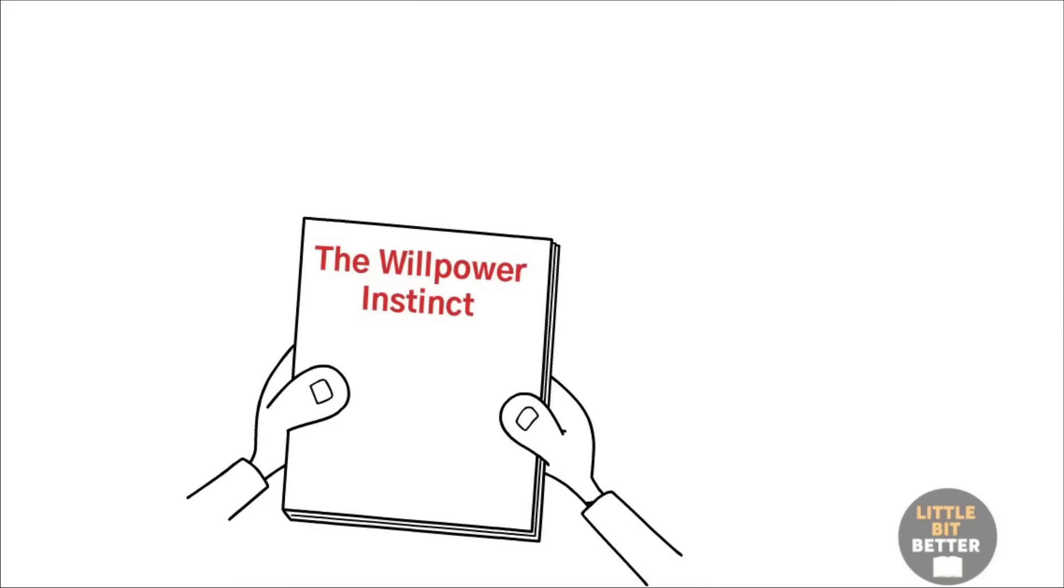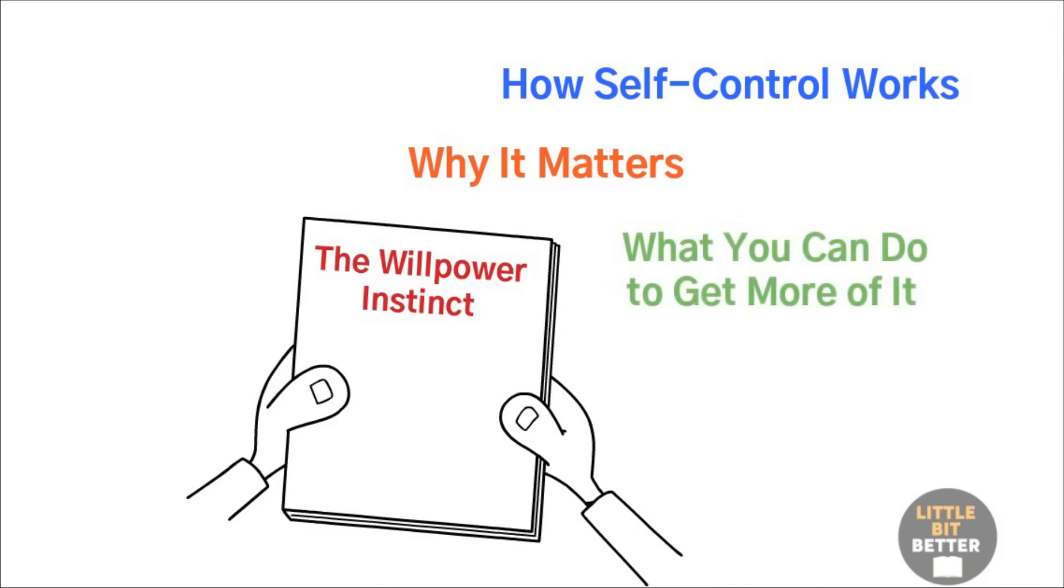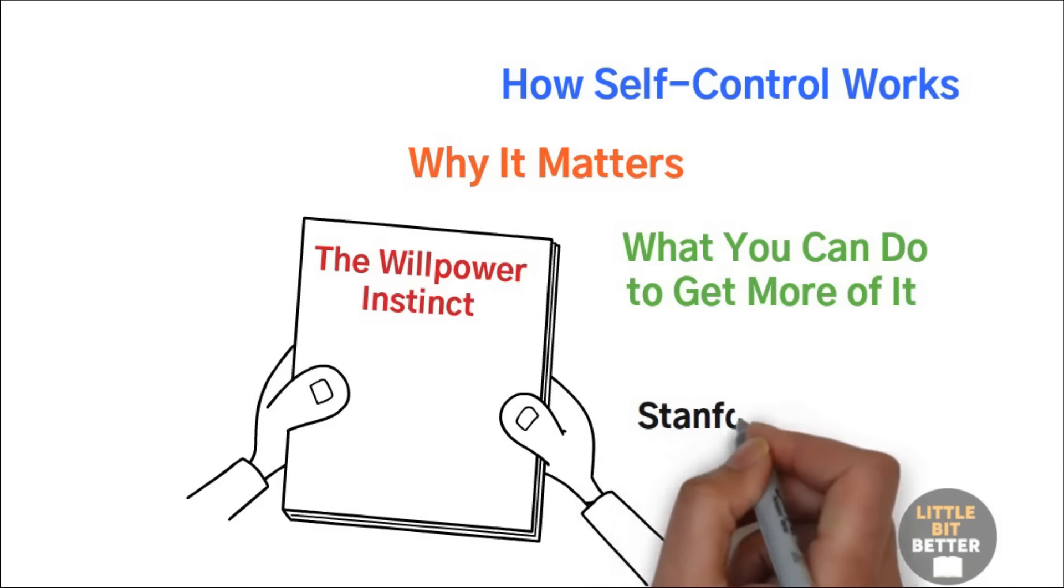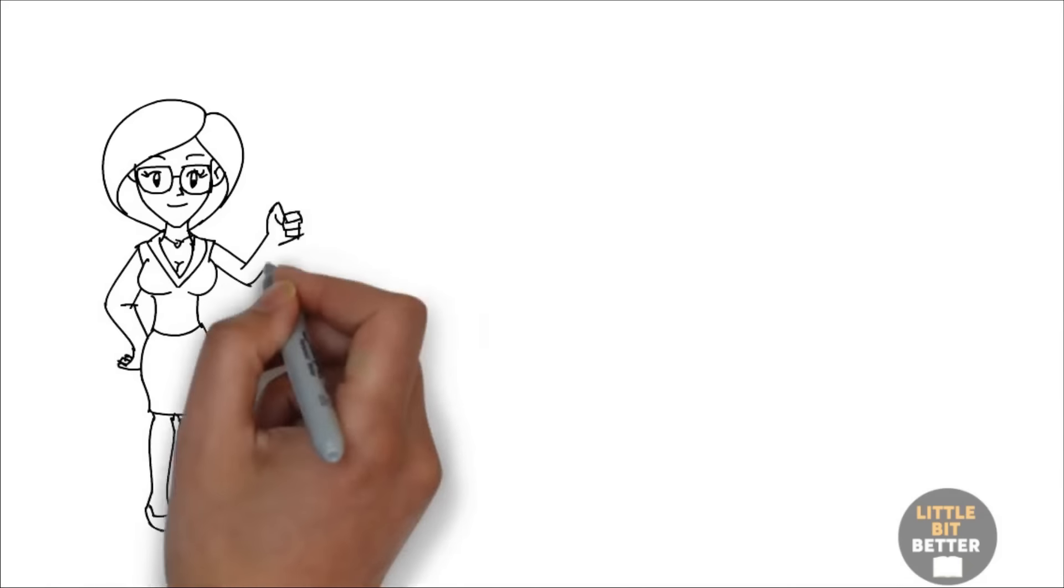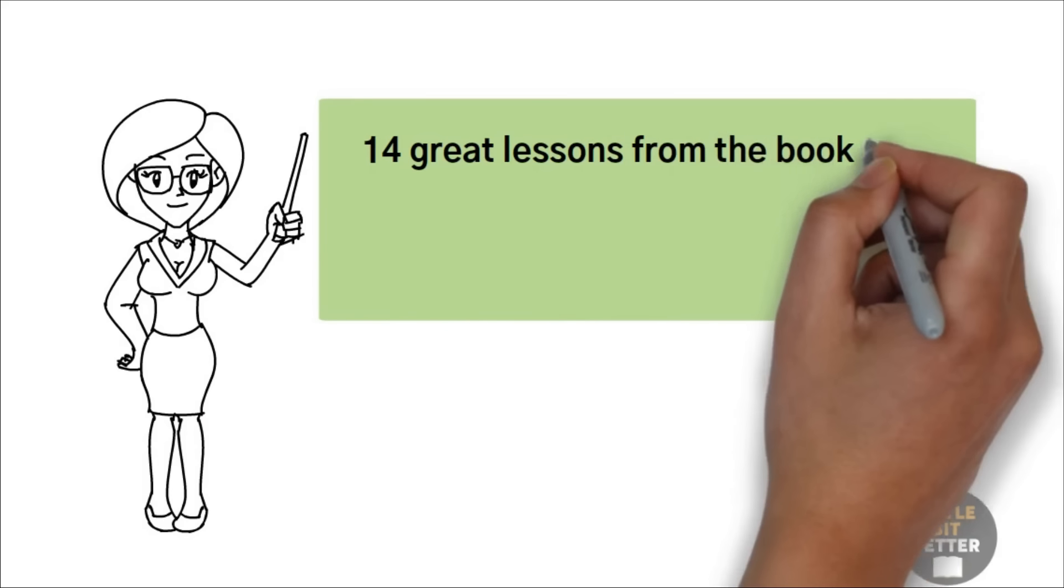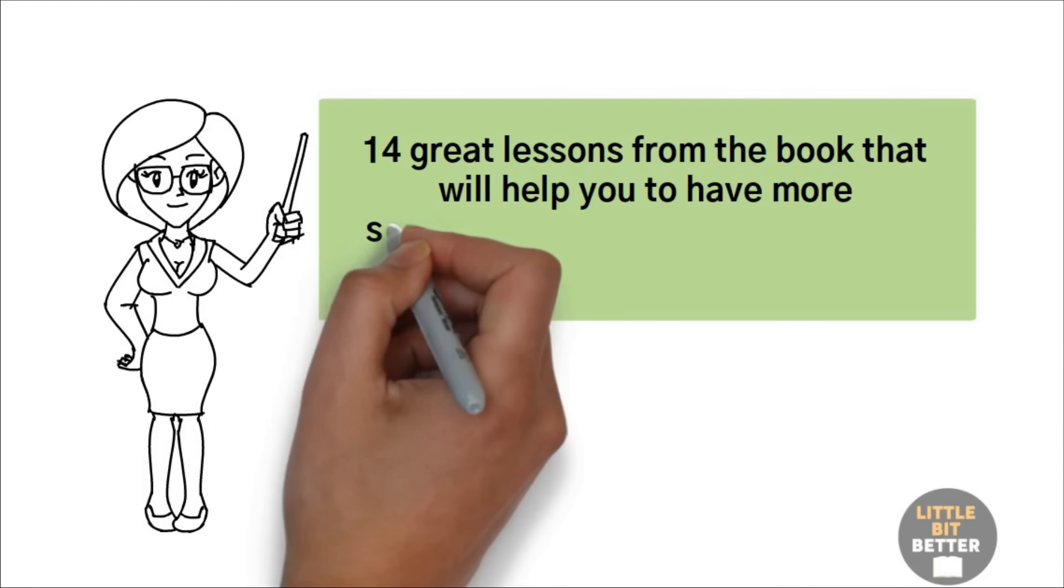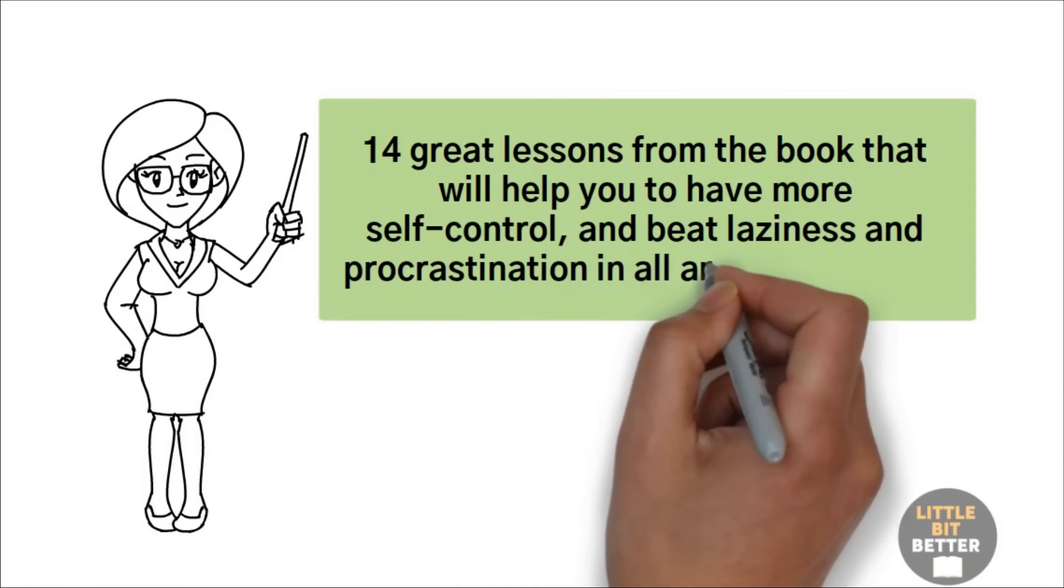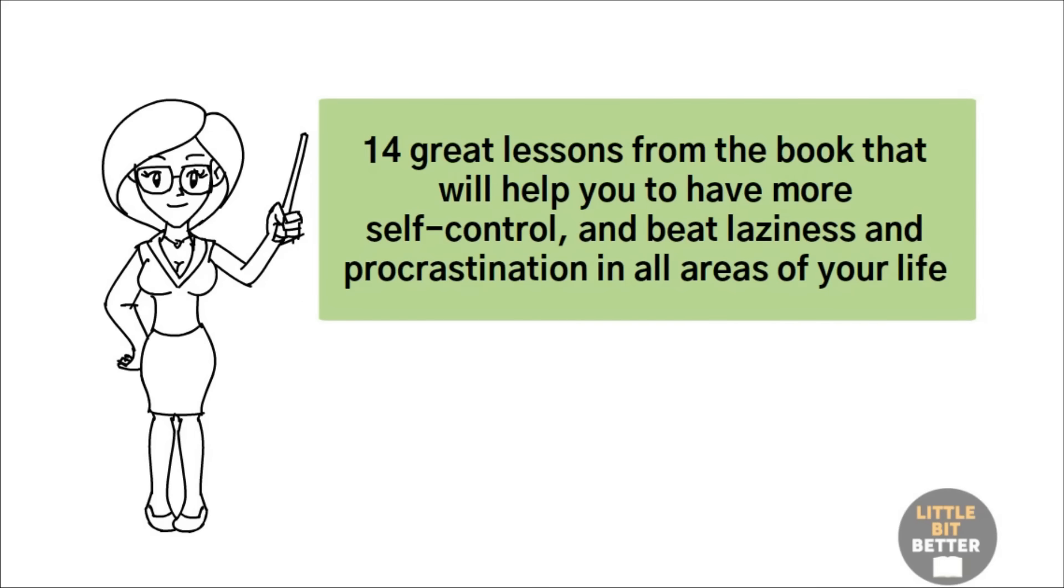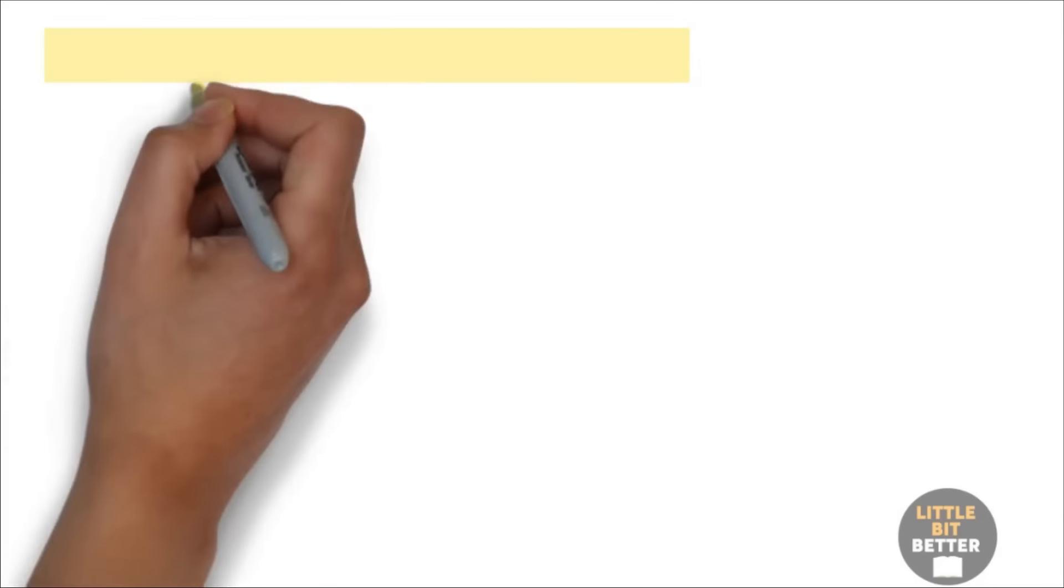The Willpower Instinct, How Self-Control Works, Why It Matters, and What You Can Do to Get More of It. The book is written by Stanford University psychologist Kelly McGonigal. I have 14 great lessons from the book that will help you have more self-control and beat laziness and procrastination in all areas of your life. So let's get started. Number one, eliminate the reward system.